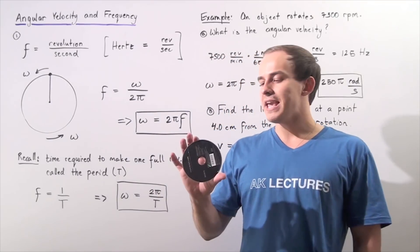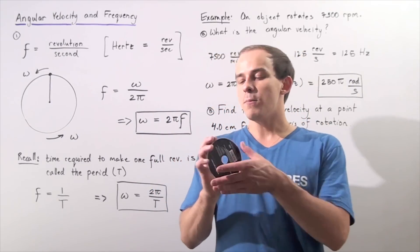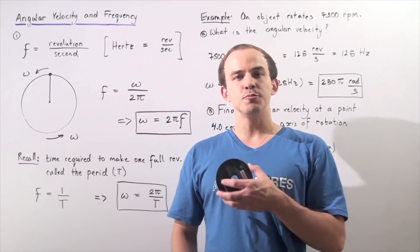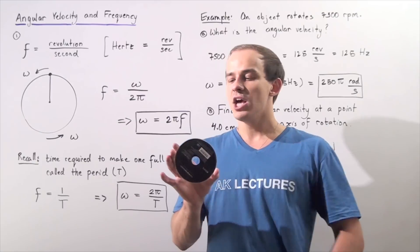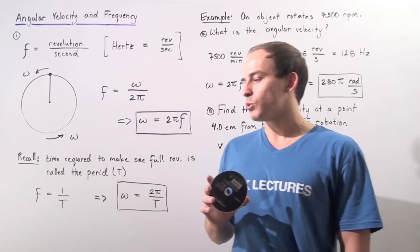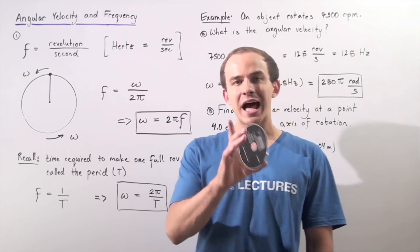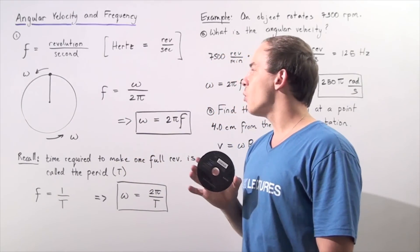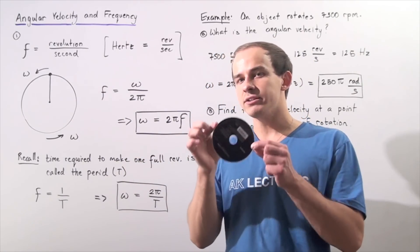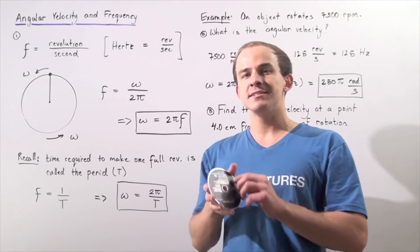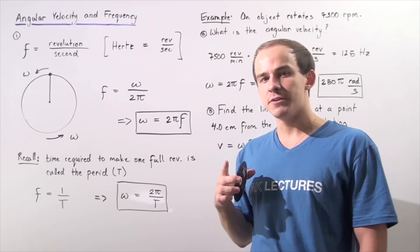Let's suppose we take the following object: a disc. Because the width of the disc is much smaller than the length or the height, we can make the assumption that we're dealing with a two-dimensional object, like the object shown on the whiteboard. Now let's suppose we take our disc and rotate it counterclockwise, in the positive direction.